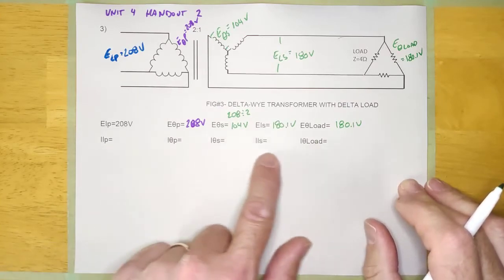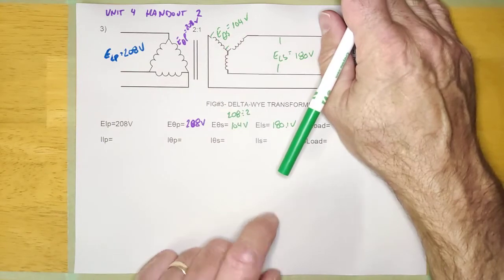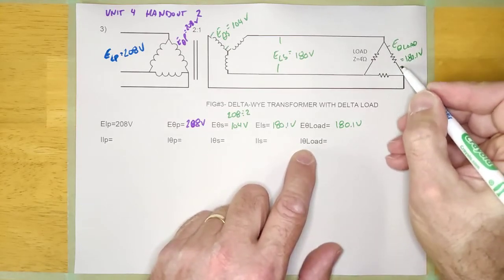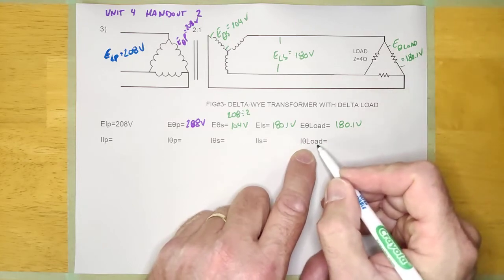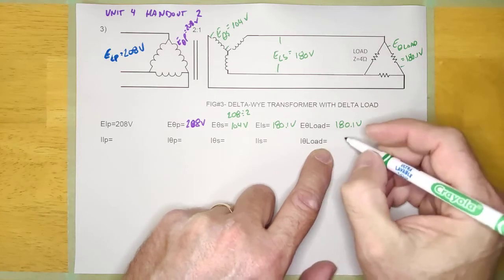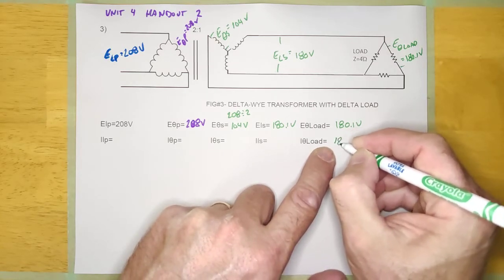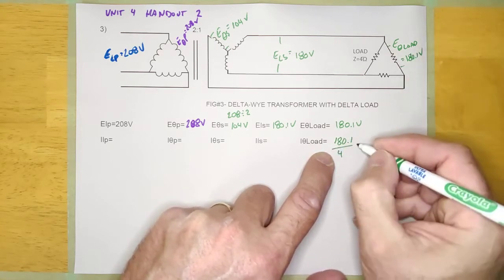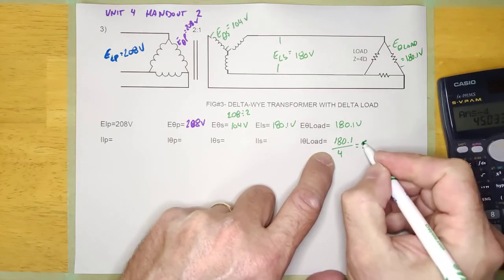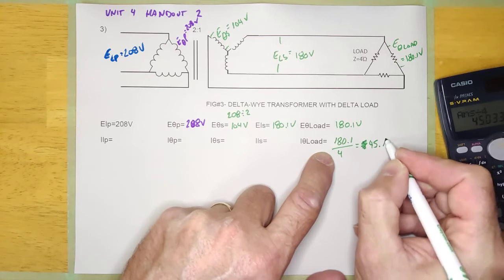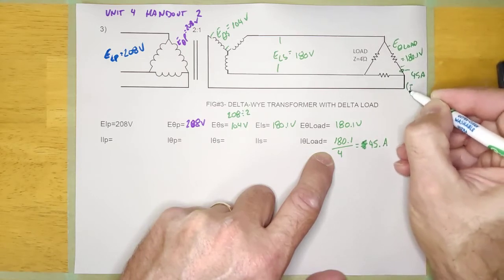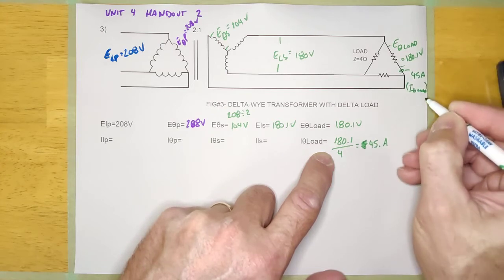Now it's asking about all these currents. Up until now we haven't had a load on there, but now we're going to actually calculate the current. E-phase load is 180 volts and the impedance is 4 ohms, so I'm going to use Ohm's Law: I equals E over Z. So it's going to be 180.1 divided by 4, and that equals 45 amps. That is I-phase load — 45 amps.